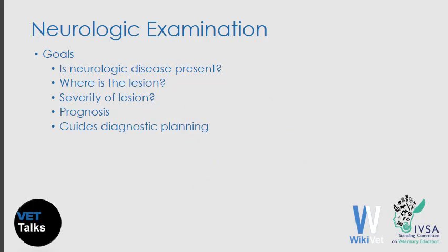The neurological examination consists of several components. The goals of the neurological examination are to determine if neurological disease is present as opposed to musculoskeletal disease, and to provide information to localize the lesion.